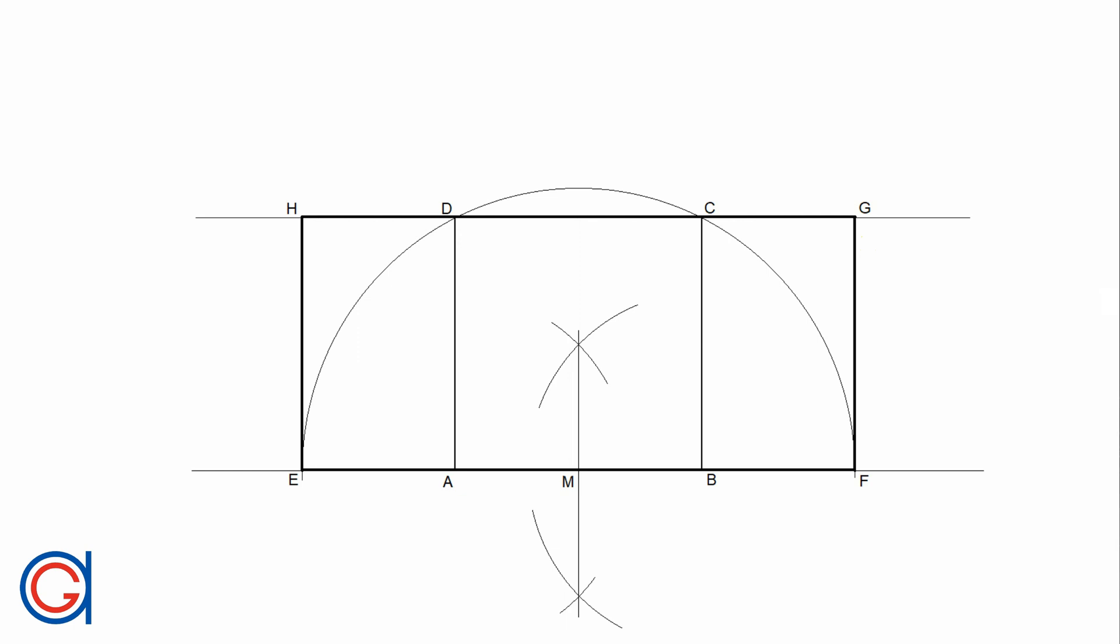HE and GF are the shorter sides of the rectangle. We'll call the shortest side EH the letter A, and the longest side HG the letter B. If you divide length B by length A, the answer will be exactly the square root of 5, as you can see in the formula at the top of the screen.